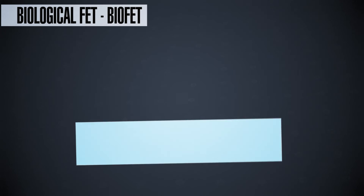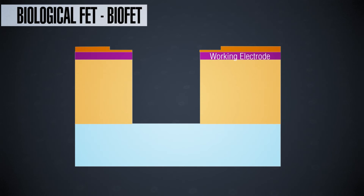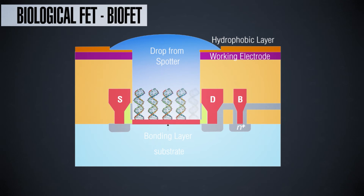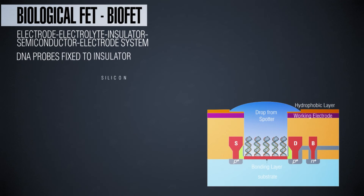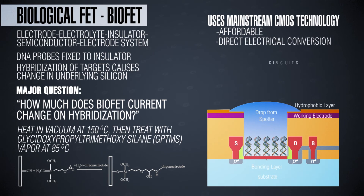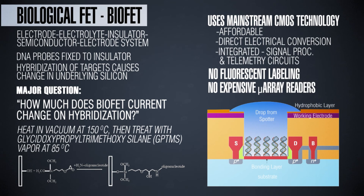The second type of transduction platform is a biological field effect transistor. The field effect transistor is the heart and soul of all computer chips and modern electronics. The difference between the FET used in computer chips and the one used for biomedical applications is that the gate region is replaced with a liquid gate. A typical FET is a three-terminal device — there is a source, a drain, and a gate in the middle which regulates the flow of electrons between the source and the drain.